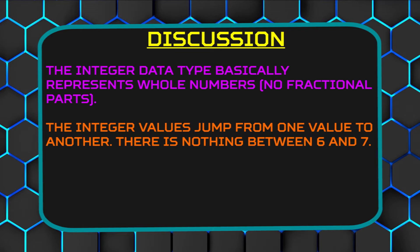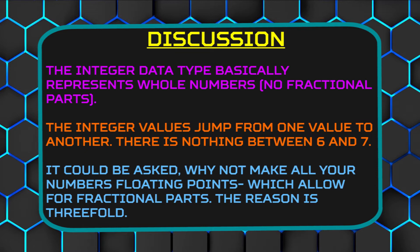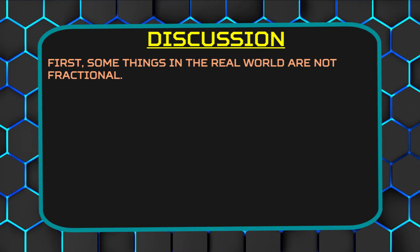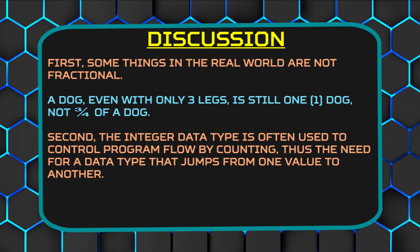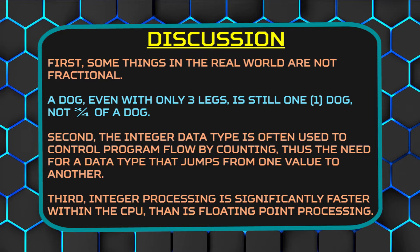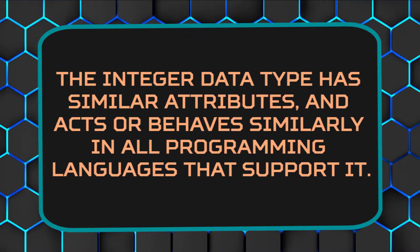The integer value jumps from one value to another — there is nothing between 6 and 7. Now, it could be asked: why not make all your numbers floating point, which allow for fractional parts? The reason is threefold. First, some things in the real world are not fractional. A dog, even with only three legs, is still one dog and not three-quarters of a dog. Second, the integer data type is often used to control programs by counting — that's the need for a data type that jumps from one value to another. Third, integer processing is significantly faster within the CPU than floating point processing.